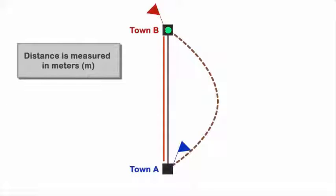Distance is measured in meters and denoted as lowercase m. The distance between these two towns is about 20,000 meters. But because of the detour, you had to cover a distance of 50,000 meters.